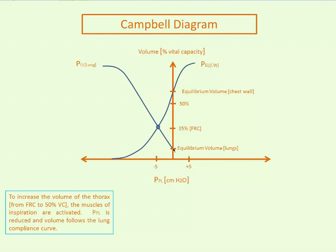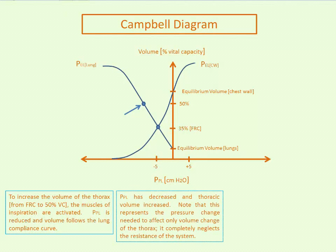Now let's talk about what happens when you want to increase the volume of the thorax, say from functional residual capacity to half a vital capacity — essentially a normal tidal volume breath in a patient with normal lungs and chest wall. While the muscles of inspiration are activated, the pleural pressure will reduce from FRC to the point along the pulmonary elastance curve that reaches your new higher lung volume. You move from here to here, and your pleural pressure has gone from say negative 5 centimeters of water to negative 8 to 10 centimeters of water, increasing your thoracic volume to 50% vital capacity. So the pleural pressure has decreased and thoracic volume has increased.